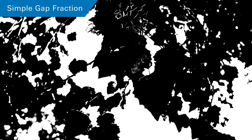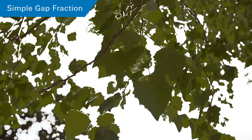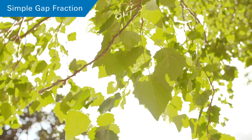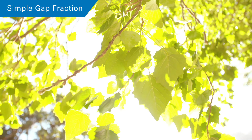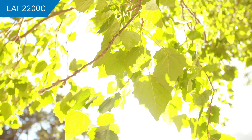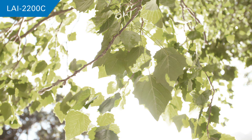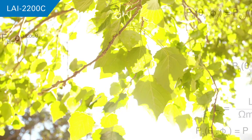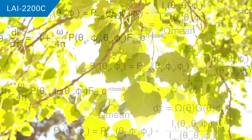Simple gap fraction methods also generally assume leaves are perfectly black — that they block all sunlight. In reality, some sunlight passes through or bounces off leaves. This can cause large errors, especially when sunlit leaves are in view. The LAI 2200C deals with this issue in two ways: first, it uses a blue filter that improves the contrast between the leaves and sky; and also, a post-processing correction is provided in the support software.